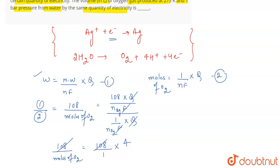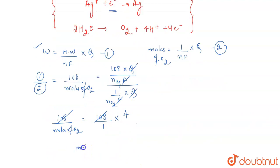So, 108, 108 will get cancelled out here. So, you will get the moles of O2 equal to 1 by 4.